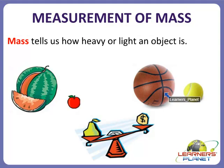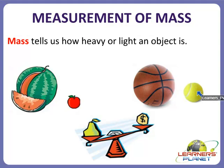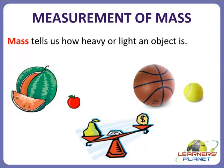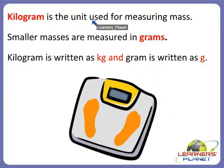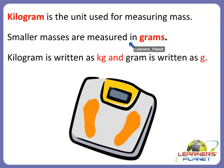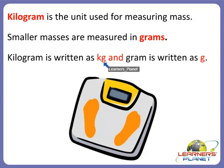This ball has a heavier mass compared to the other ball. Mass tells us how heavy or light an object is. Kilogram is the unit used for measuring mass, and smaller masses are measured in grams. Kilogram is written as 'kg' and gram is written as small 'g'.